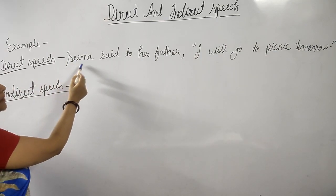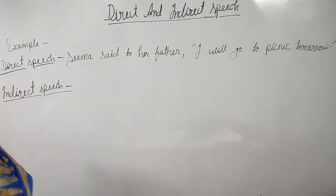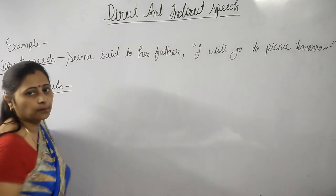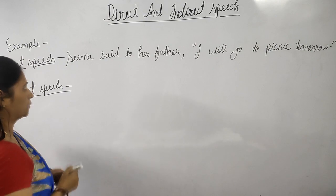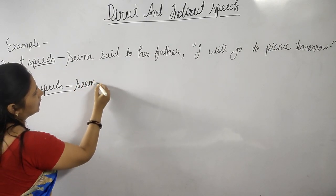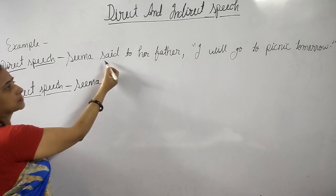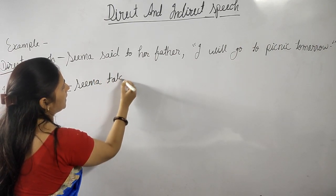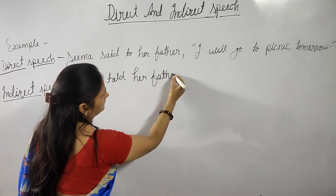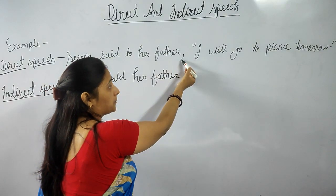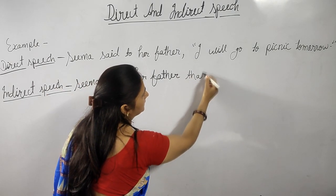That is: Seema said to her father, 'I will go to picnic tomorrow.' I have already told you how to change the reporting word and reported speech. So let's start with how to change the reporting word 'said to.' As here, the subject of the reporting word and the object of the reporting word are both given, so we will change 'said to' into 'told.' Seema told her father — then in place of the comma and inverted comma, we will put the conjunction 'that.'